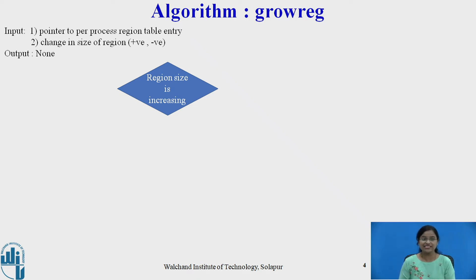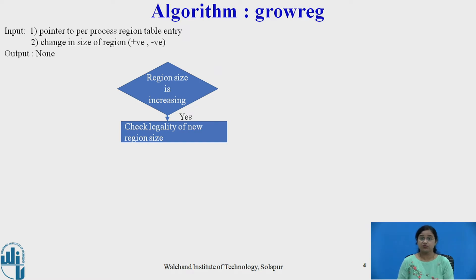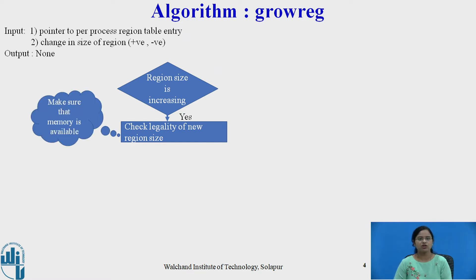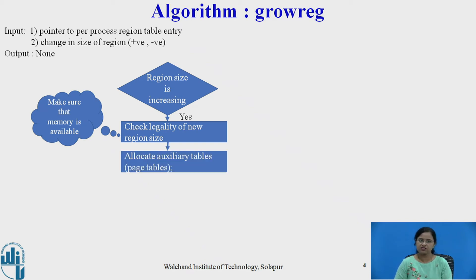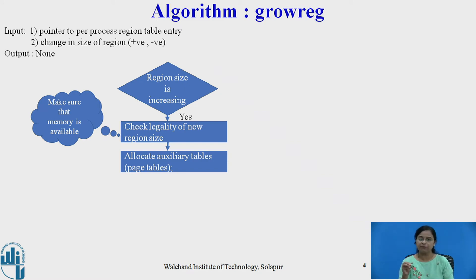In the first step, the kernel checks whether the region size is increasing. If it is increasing, then it checks the legality of the new region size — whether the virtual address space they wish to expand is legal and does not overlap with other virtual addresses of the process. If memory is available, it allocates auxiliary tables, meaning the page table. As the virtual address space expands, the kernel allocates the page table to store the addresses of that memory, and allocates page tables accordingly.